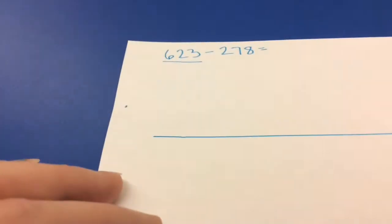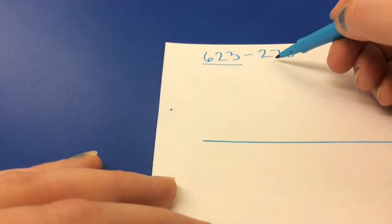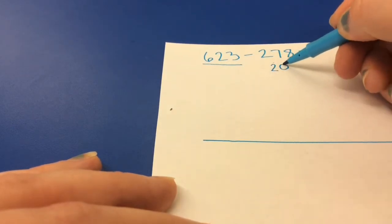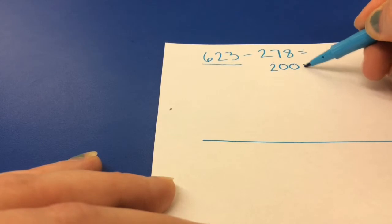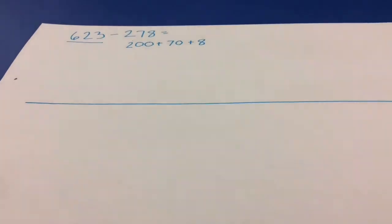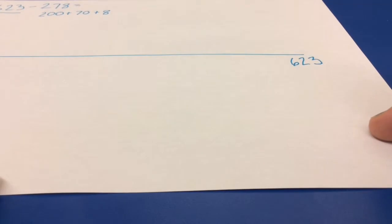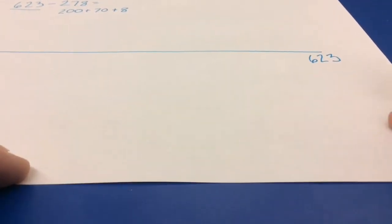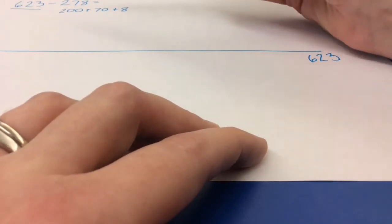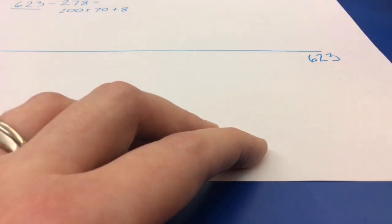Now I go back to the smaller number, which is 278, and I break it apart into its expanded form of 200 plus 70 plus 8. Now that I have it in expanded form, I'm ready to start taking it away from that number, 623. So in my expanded form, I have 200s.